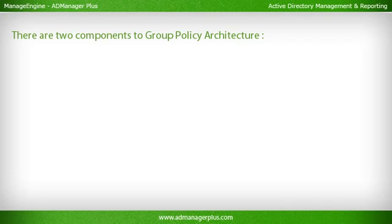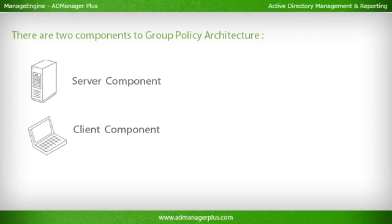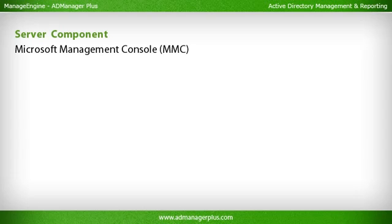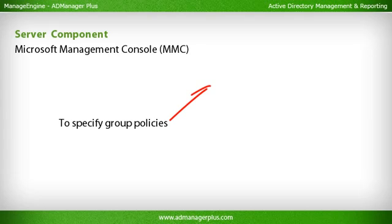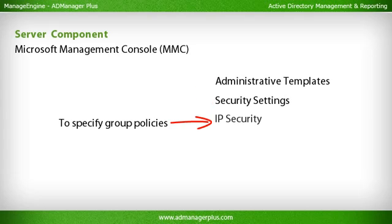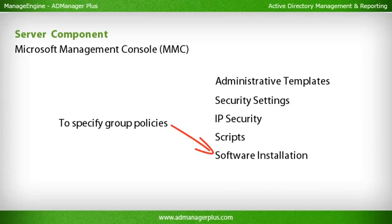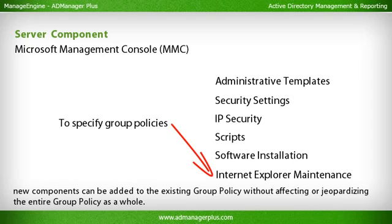Group Policy Architecture has two components. The Server Component, known as the Microsoft Management Console Snap-in, is used for specifying the Group Policy Settings. The MMC Snap-in can be used to specify policies to control and manage the following areas: Administrative Templates, Security Settings, IP Security, Scripts, Software Installation, and Internet Explorer Maintenance. Each of these areas is called an extension, and each can have a child extension which allows addition of new components or updating an existing component to the group policy without affecting the entire group policy as a whole.